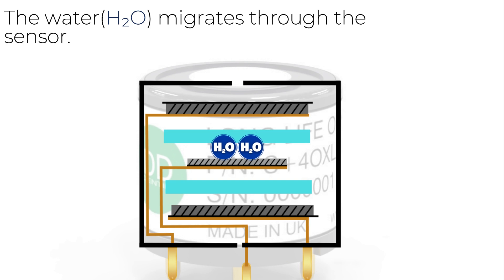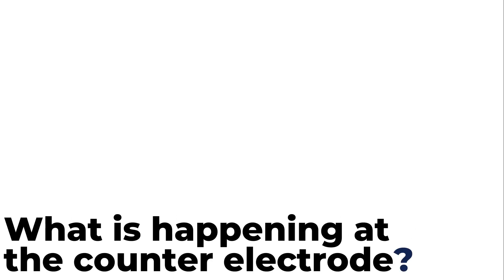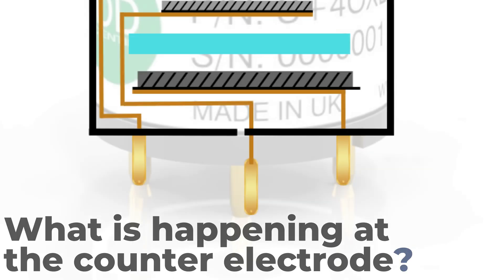The water is absorbed back into the electrolyte and can move freely around the sensor. At the counter electrode water is broken up by a process known as electrolysis into electrons, hydrogen ions and the evolution of oxygen.